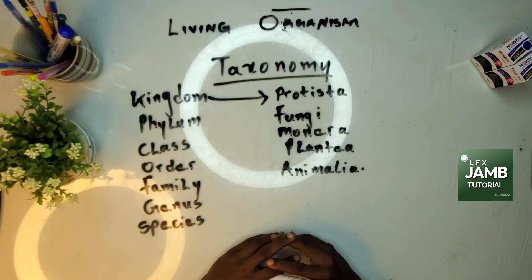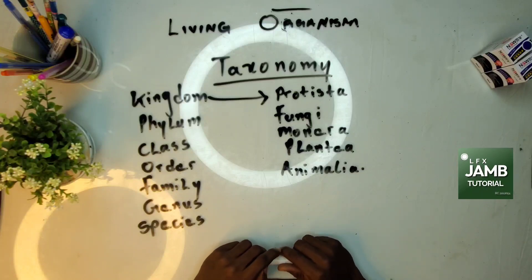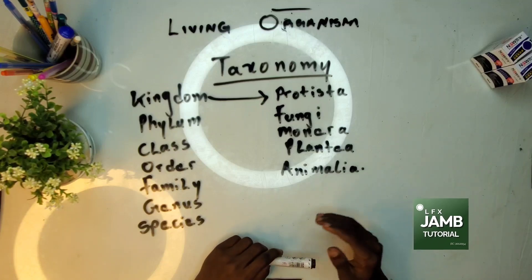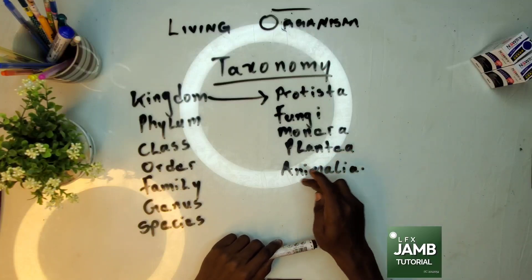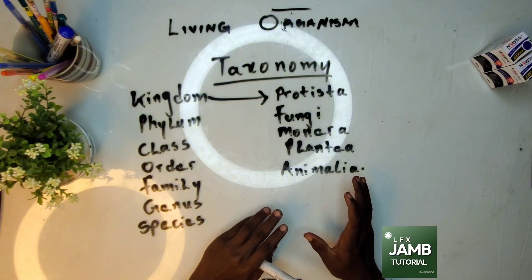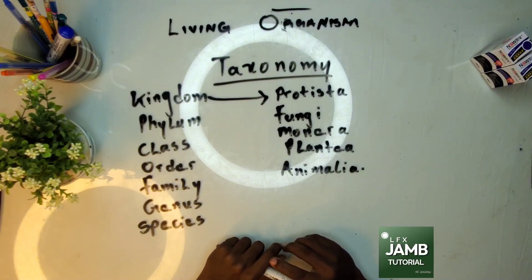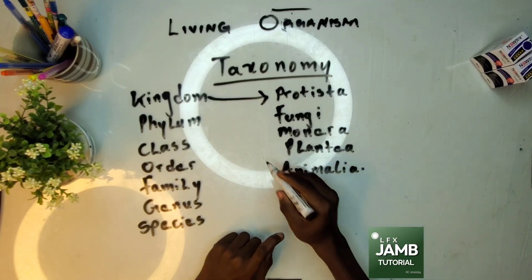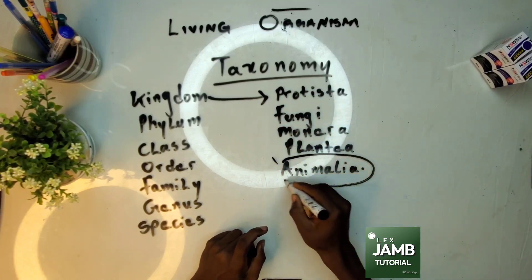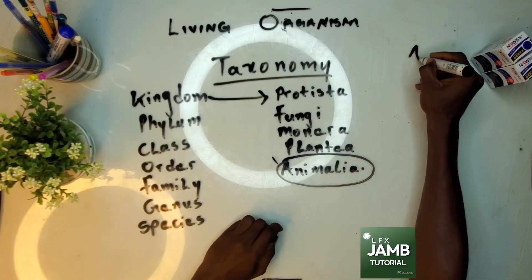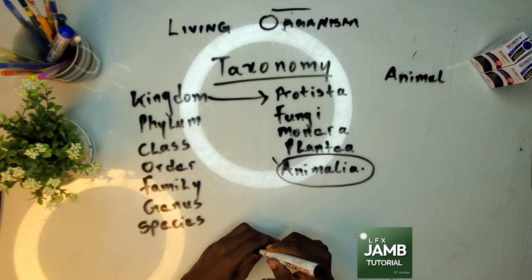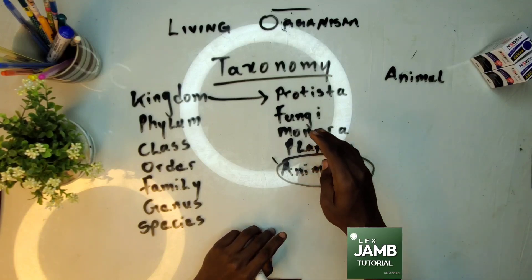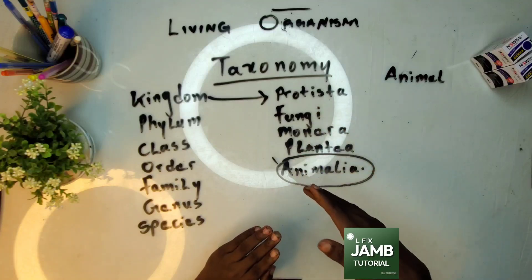Here are the list of kingdoms: we have Protista, Fungi, Monera, Plantae, and Animalia — plants and animals. We are going to be classifying humans. What classification do we fall under? We fall under Animalia, so we highlight Animalia. Every other living thing falls under one of these classifications. For instance, plants fall under Plantae; Monera, Fungi, and Protista include organisms like the amoeba.